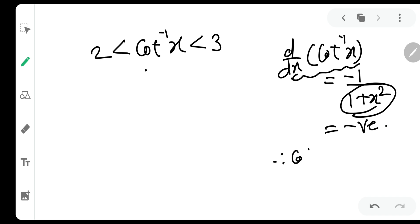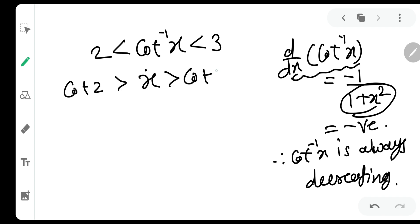Therefore, cot inverse x is always decreasing. This is very important. Now, as cot inverse x is decreasing, when you take cot on all sides, the inequality sign changes. So, x is less than cot 2 and x is greater than cot 3.